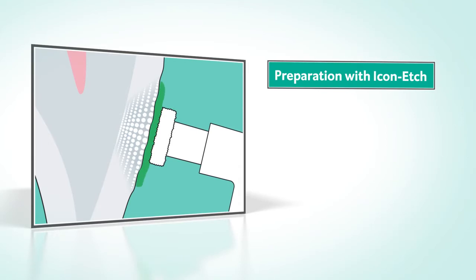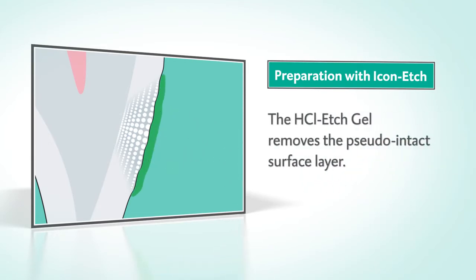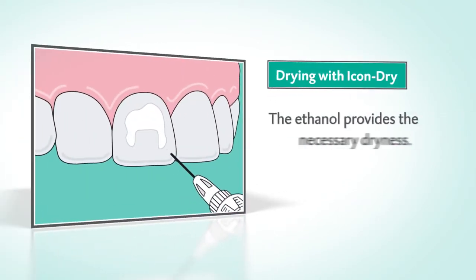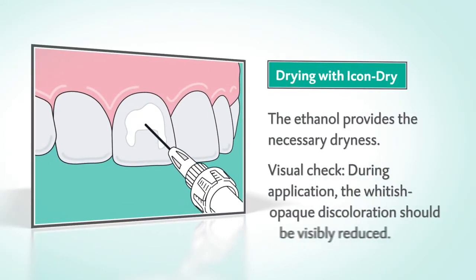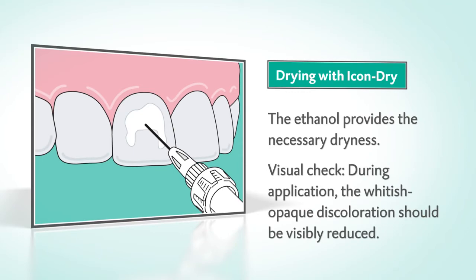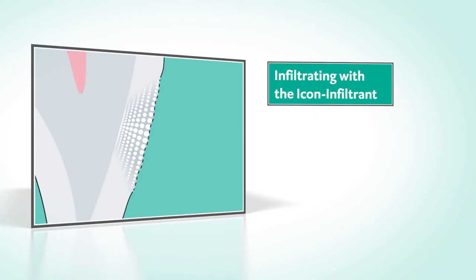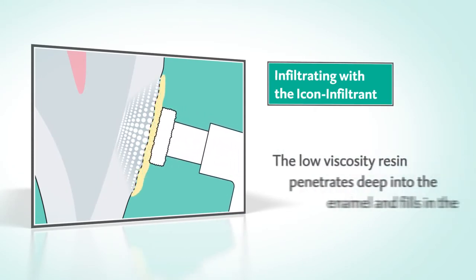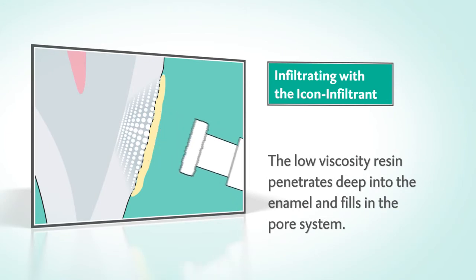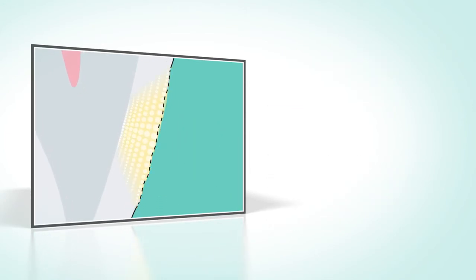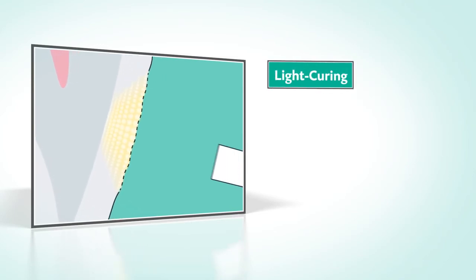Application is simple. First, the tooth is prepared with Icon Etch. Then the area is carefully dried with air in the ethanol — Icon Dry. Now the low-viscosity Icon Infiltrant can penetrate deep into the enamel and fill in the pore system completely.